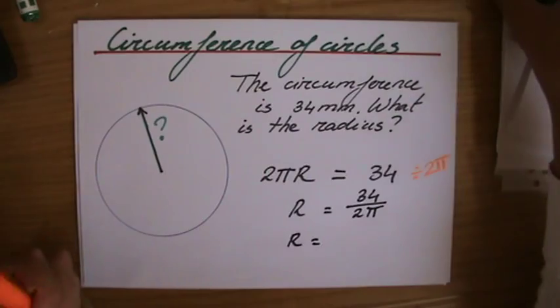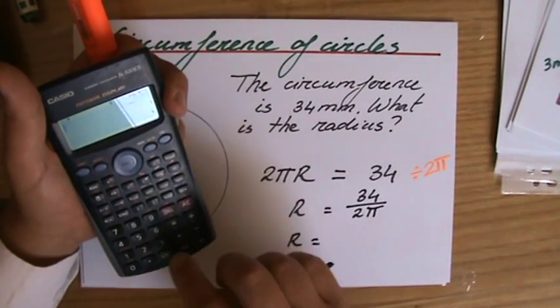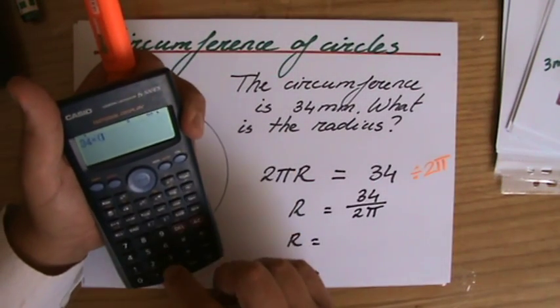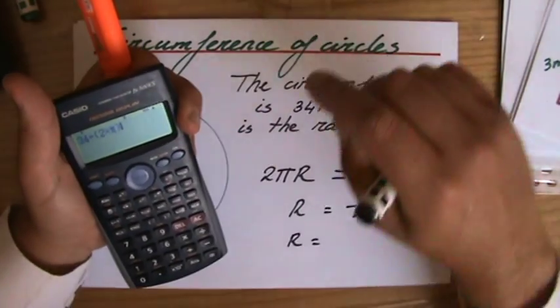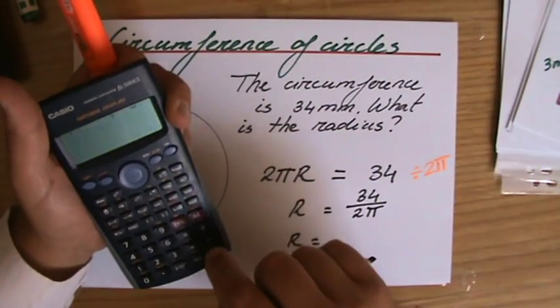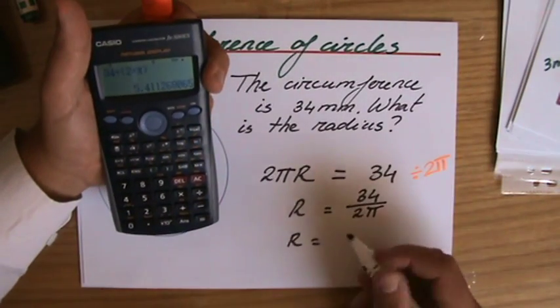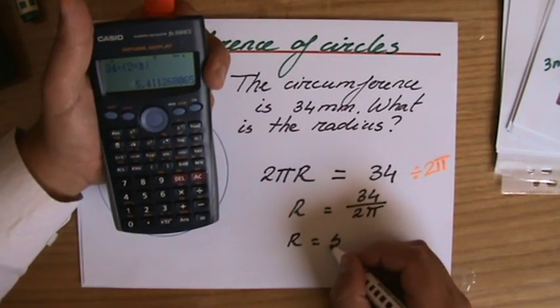That equals, if I do that in my calculator, 34 divided by 2 times π. You know where to find your π button by now.